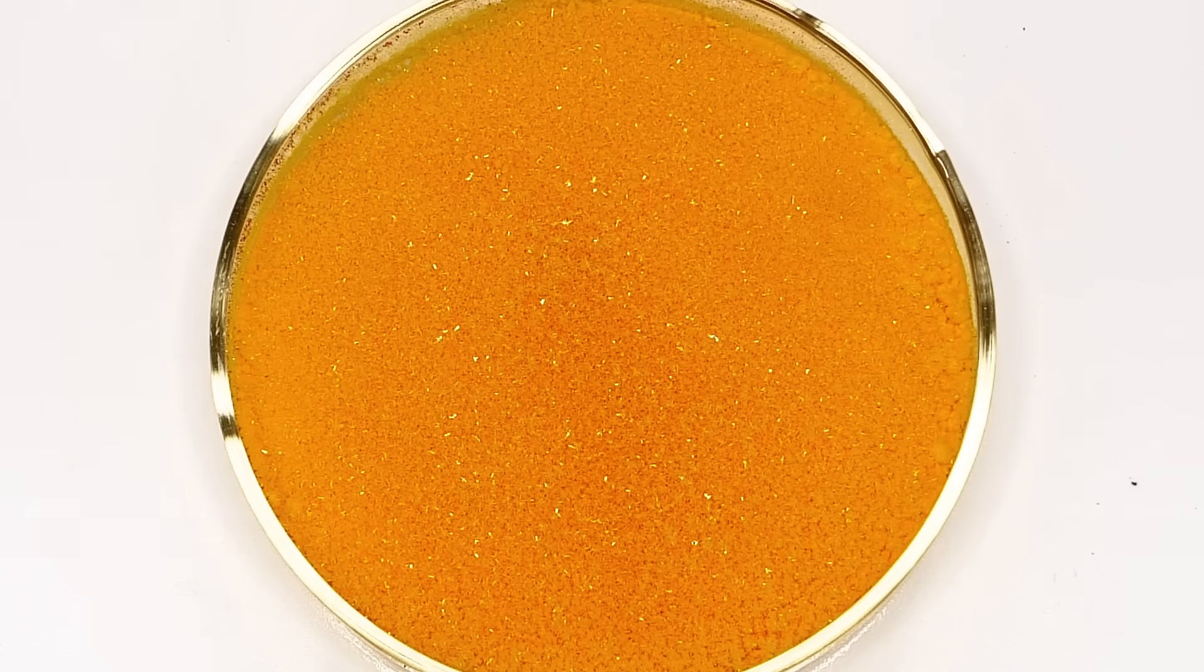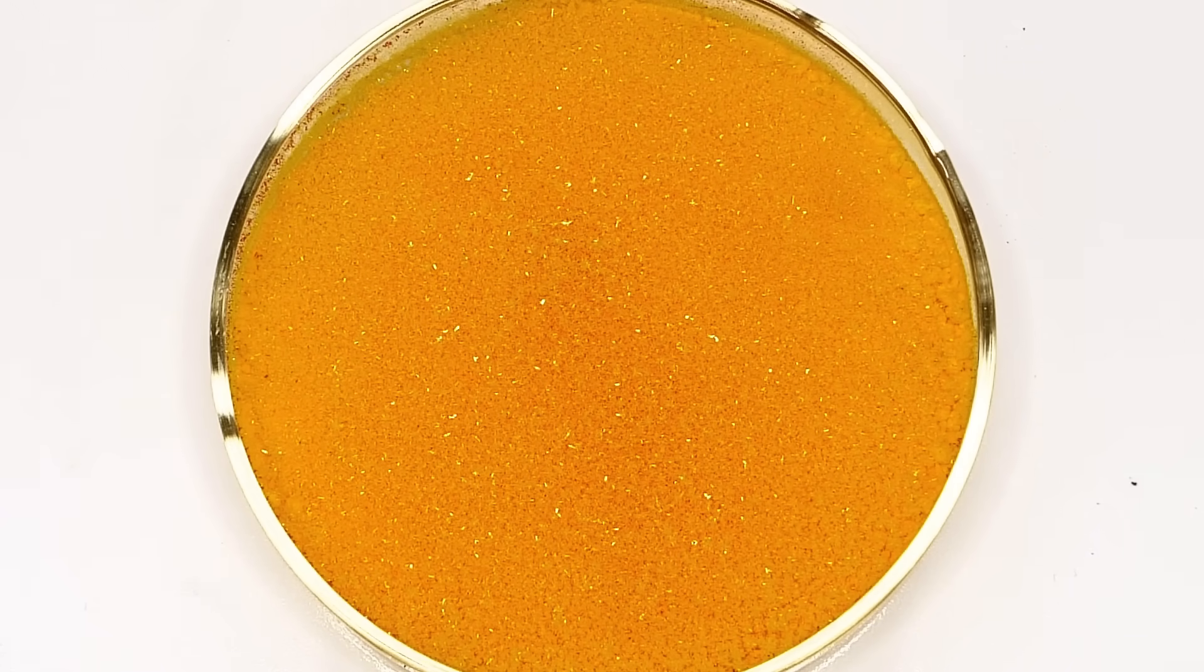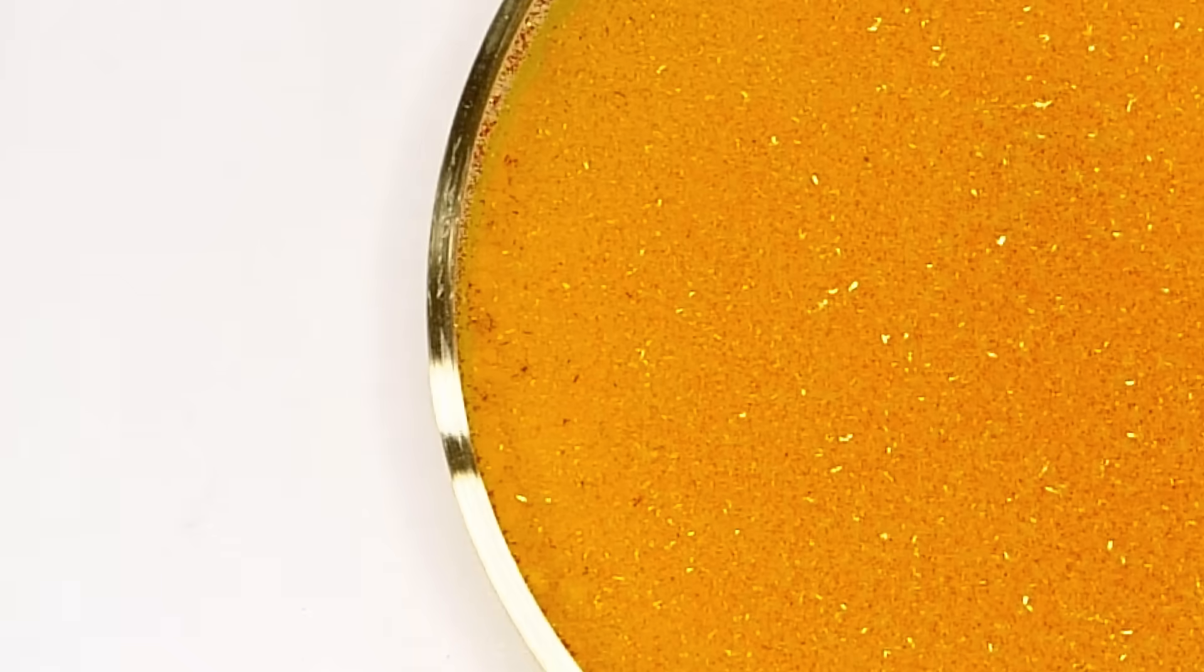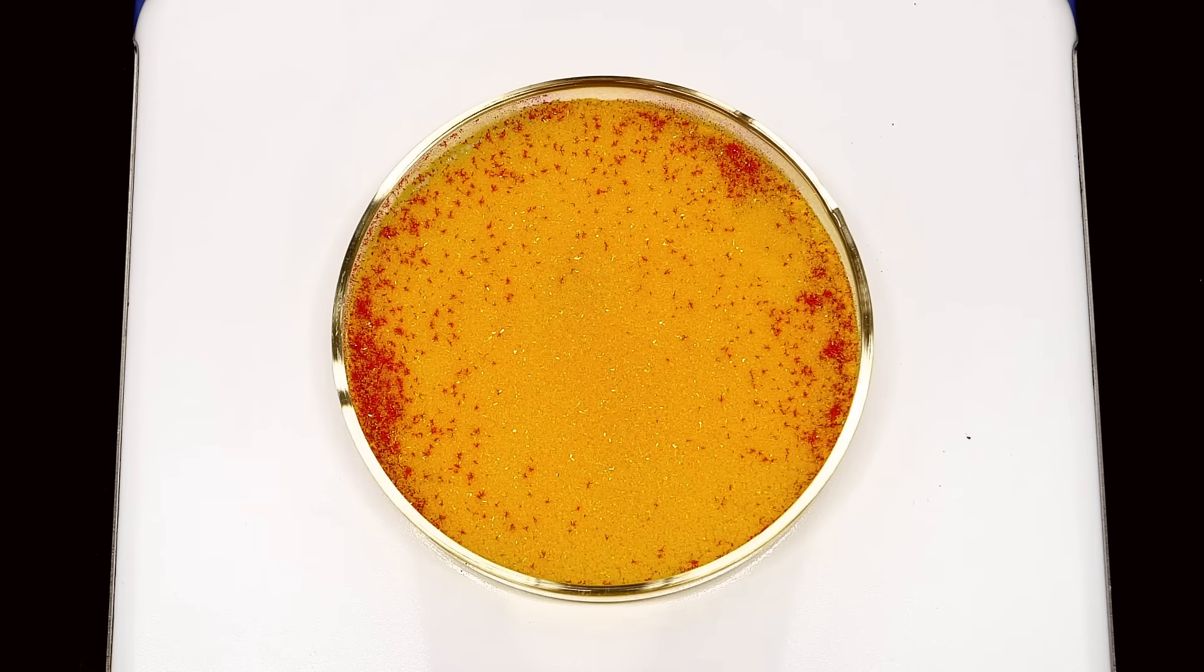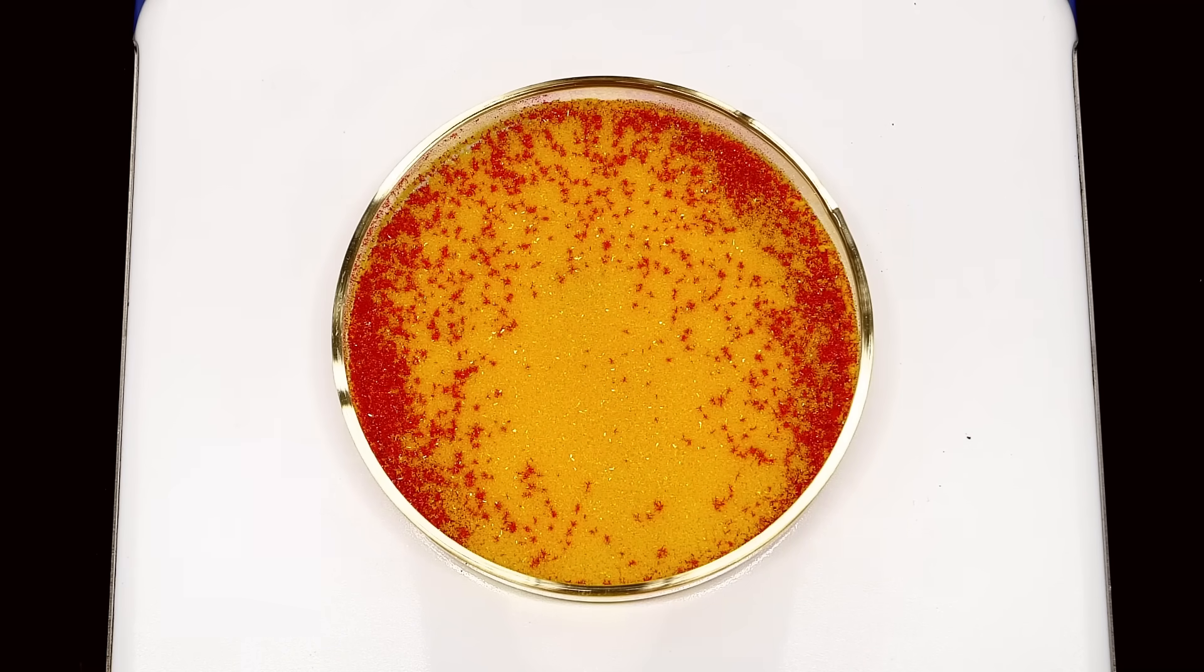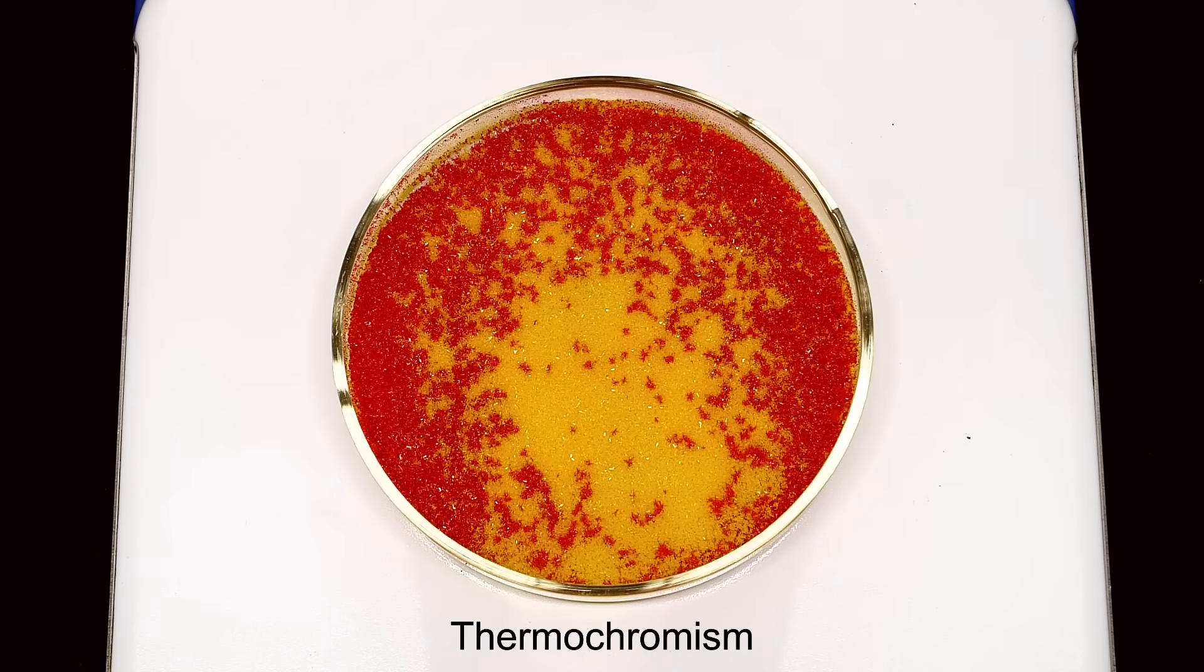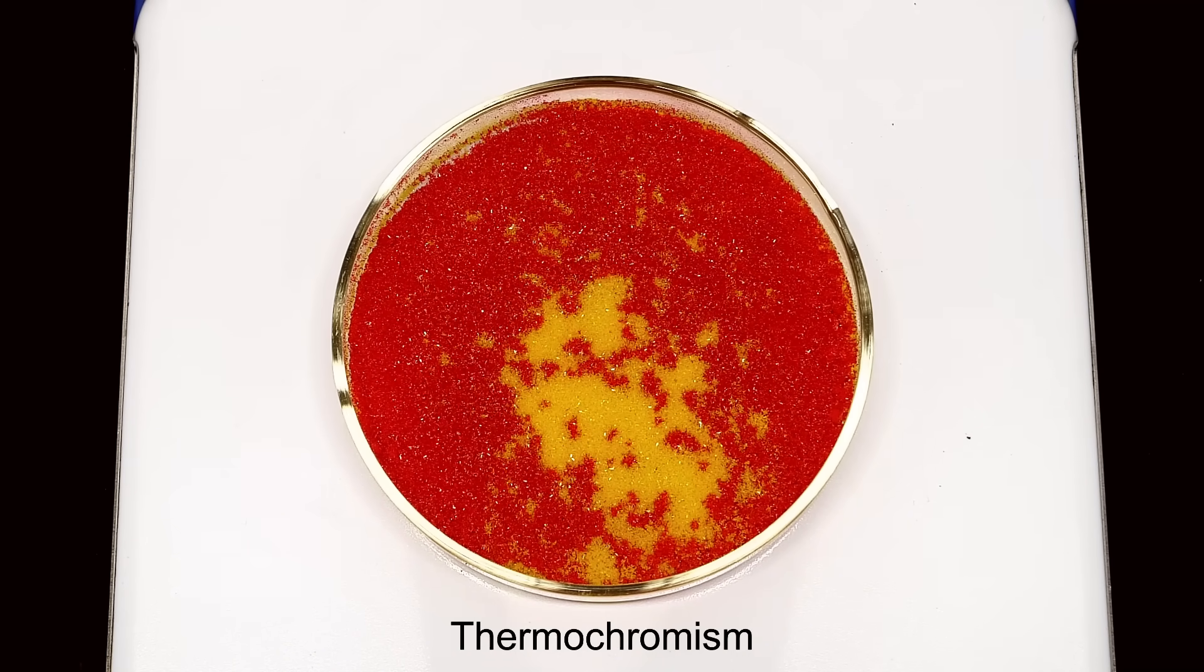What I think is cool, though, is what happens when I turn off the hot plate. Some of the red color starts coming back, and this is happening because the powder is cooling down. This color-changing effect, based on temperature, is called thermochromism, and I really think it almost looks like magic.